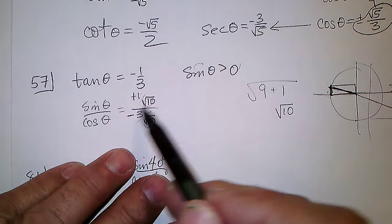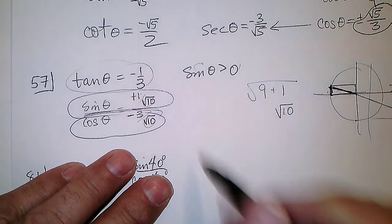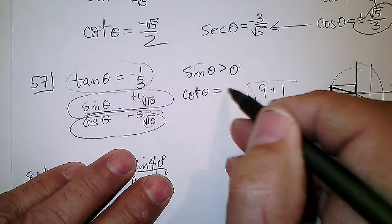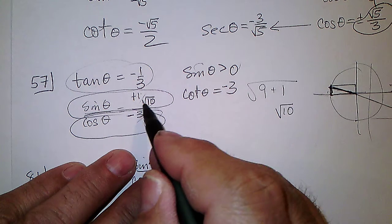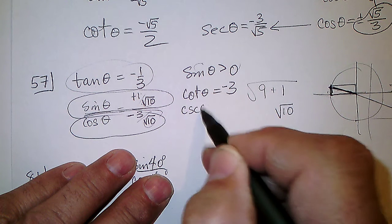Alright, but we now know what the sine is, we know what the cosine is, and the tangent, so the cotangent is going to be the reciprocal, minus 3. The sine's reciprocal, the cosecant of theta, is going to be square root of 10.